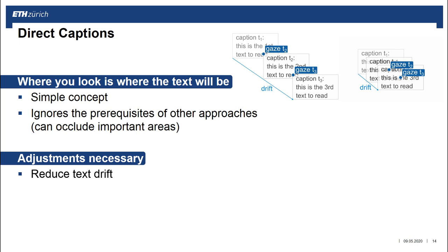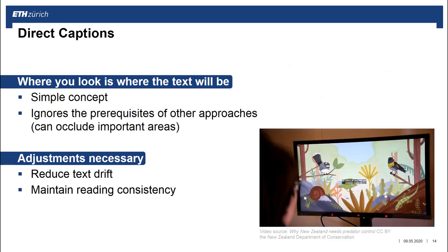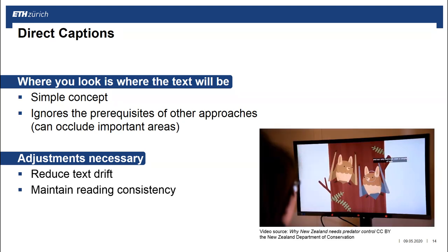The second finding is that we need to maintain reading consistency. While you are reading, new text will appear without changing the position. This way you can continue reading similar to traditional captions. Only if your gaze leaves the caption box and you look elsewhere, a new caption will appear at this new position. As you can see in the video, the text appears centered to the gaze position.